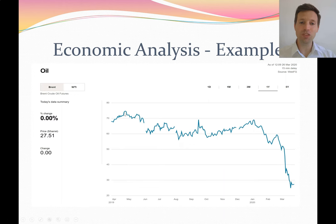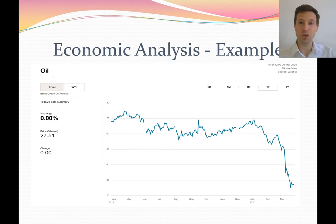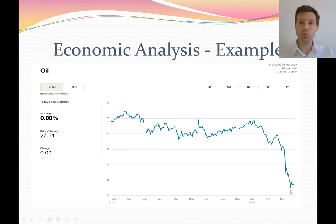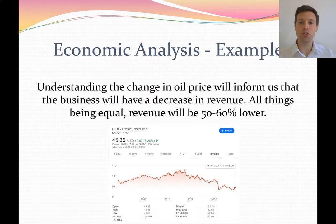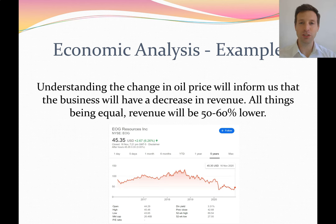The oil price was up really high, and then in 2020 the oil price started to decrease really rapidly. Because we understand that the key driver of EOG's performance is the oil price — because they sell oil — if the price of the goods they're selling has decreased by more than 50%, then all else being equal, we would expect their revenues to also decrease by maybe 50 to 60%. Understanding that they're an oil producer and the oil price drives their revenue allows us to forecast into the future that their revenues are likely to be reduced.